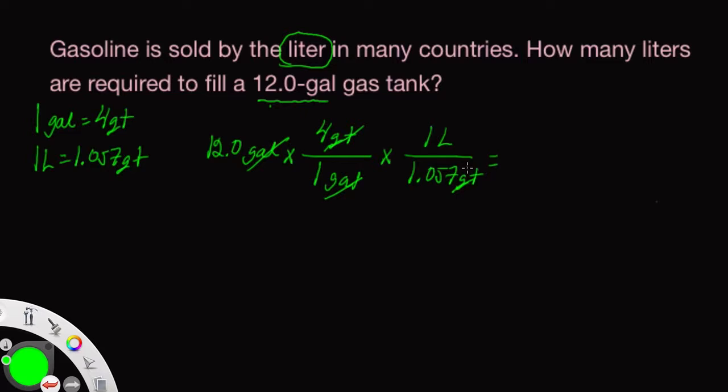On the calculator, we'll take 12 times 4 and then divide by 1.057, and we get a quantity of 45.4115421.